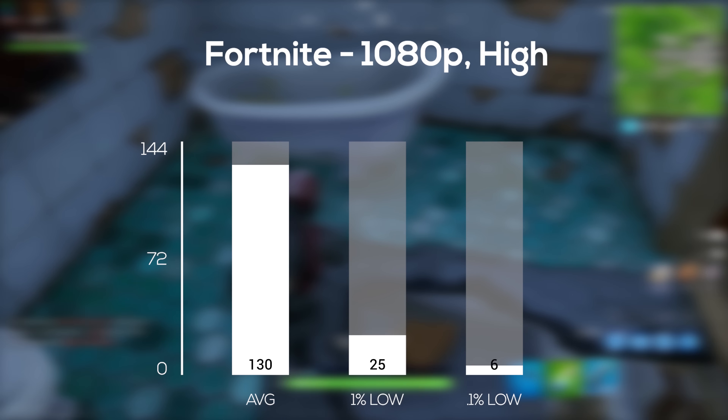Next up was PlayerUnknown's Battlegrounds, and in 1080p with high settings we have pretty much the exact same thing as Fortnite — a really good average FPS, but the lows were just terrible. Keep in mind that if you cap these games at 60 FPS, which I definitely recommend, you'll get way smoother and more consistent results.